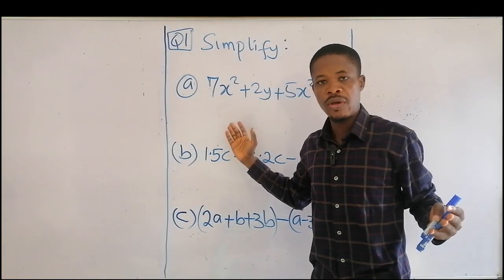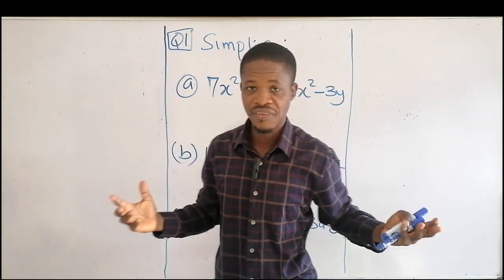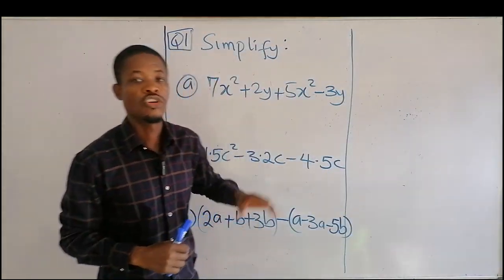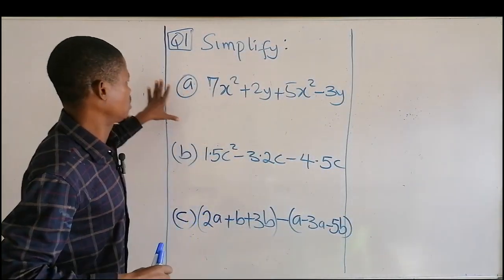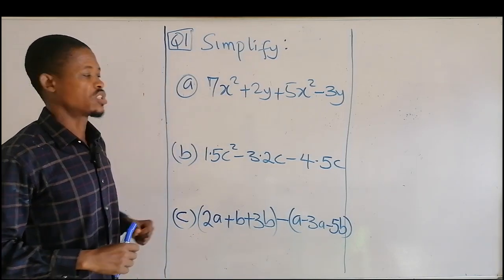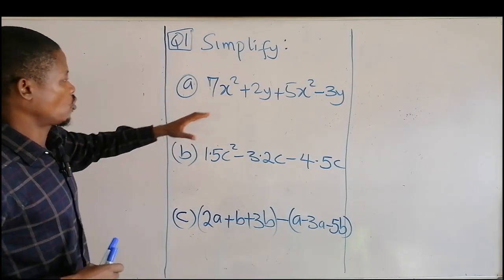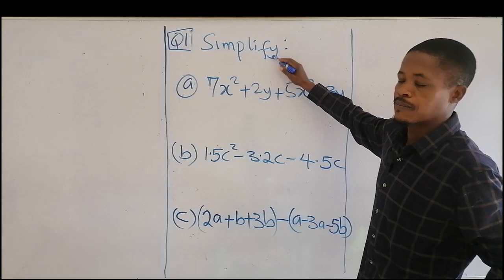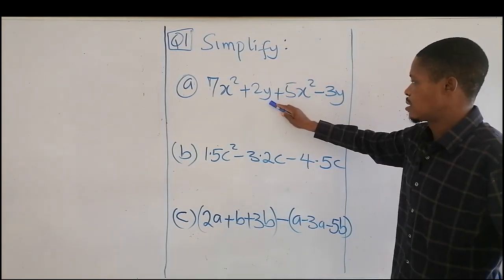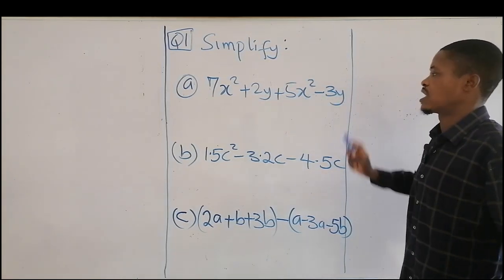Welcome to the channel. We're looking at different questions on algebra. Let's take a look at this one. The first question: simplify 7x² + 2y + 5x² - 3y.